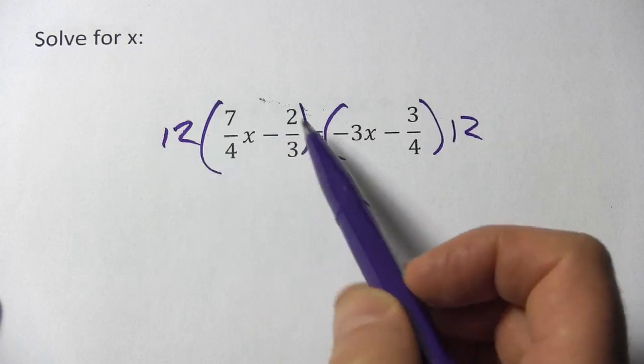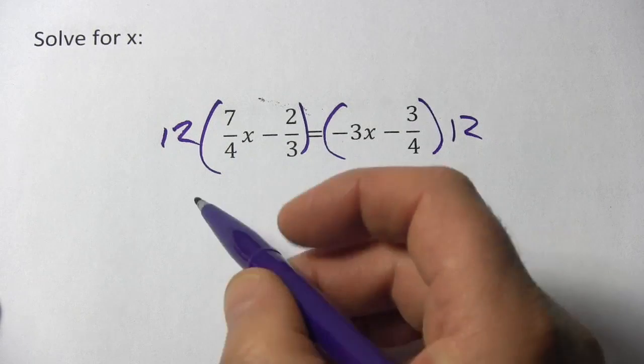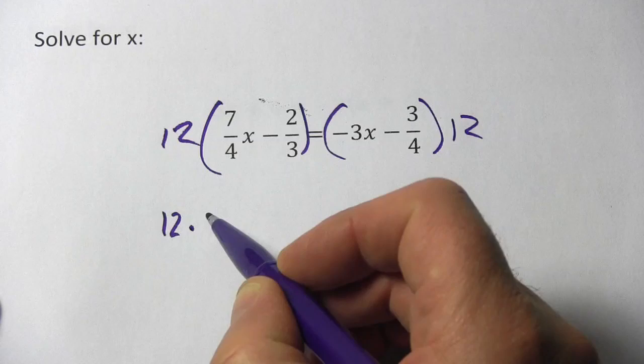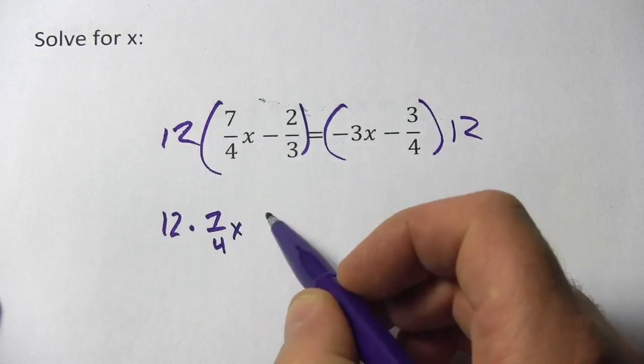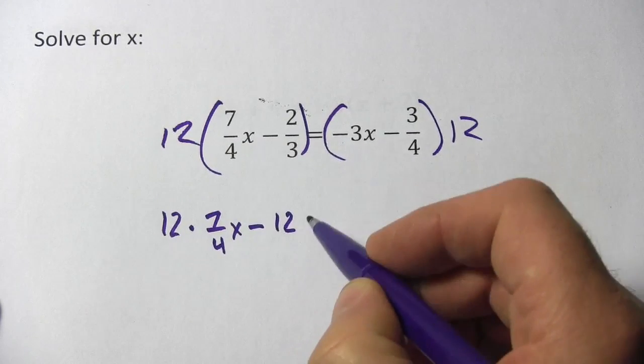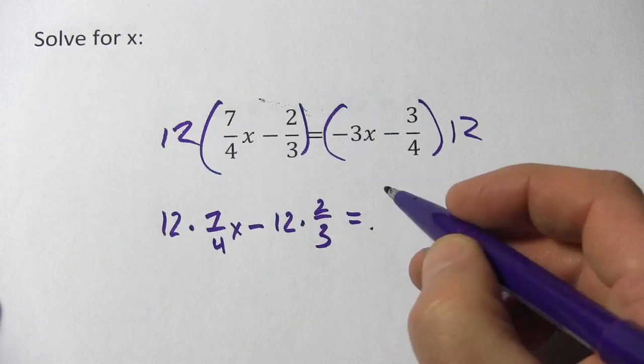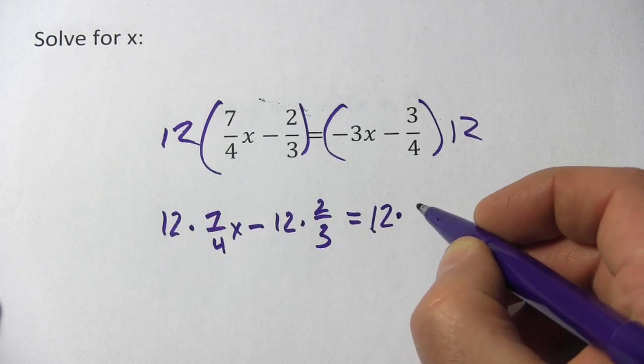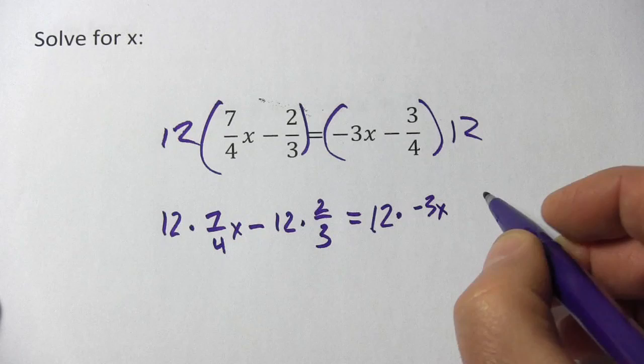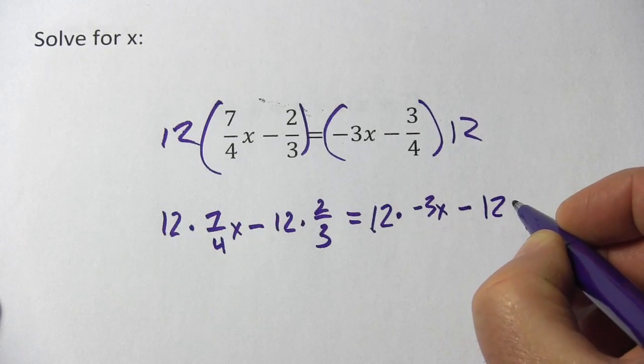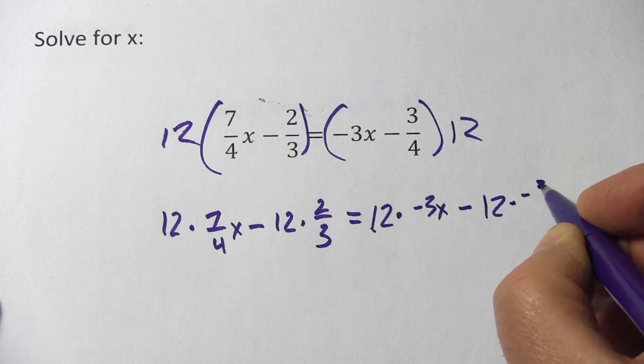We're going to have to distribute these 12s. So this becomes 12 times 7 fourths x minus 12 times 2 thirds. And same thing over here: 12 times negative 3x minus 12 times negative 3 fourths.